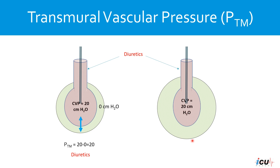In the other patient, the transmural pressure is the intraluminal pressure minus the surrounding pressure. If the surrounding pressure is 18 cmH₂O, then the transmural pressure would be 20 minus 18, which equals 2 cmH₂O — and you would end up giving this patient fluid instead. Without knowing the transmural pressure, it is very difficult to utilize the CVP as an indicator of volume status. Similarly, without knowing the compliance of the right ventricle, it is very difficult to estimate volume from pressure alone. We have stopped using central venous pressure in our practice and now use other dynamic measures to determine fluid status.